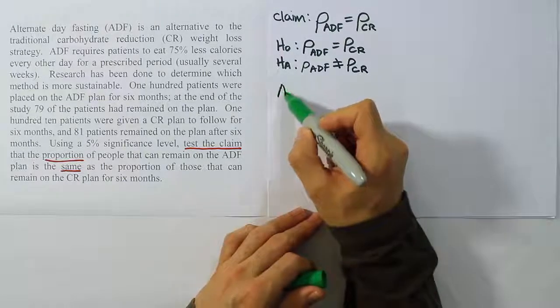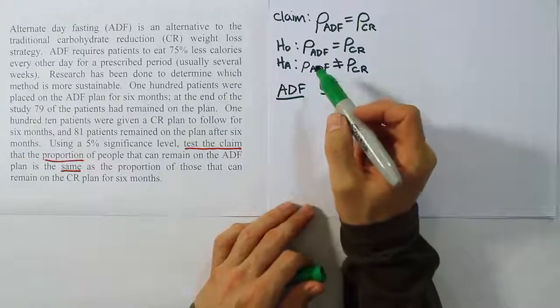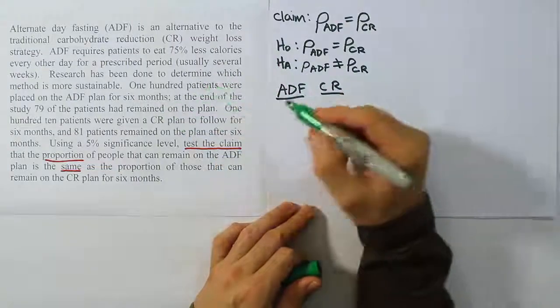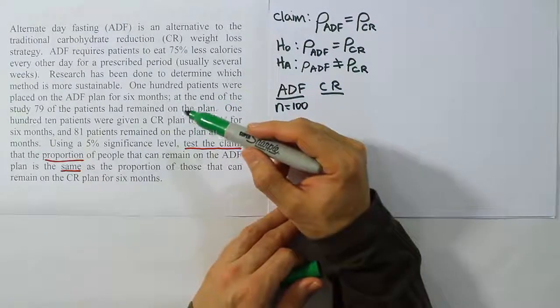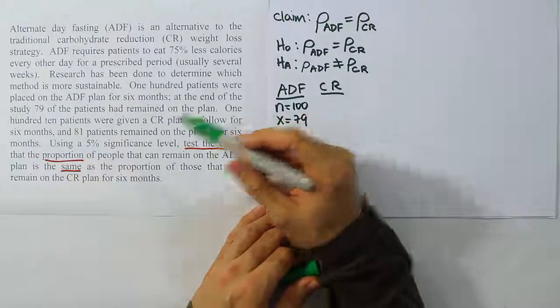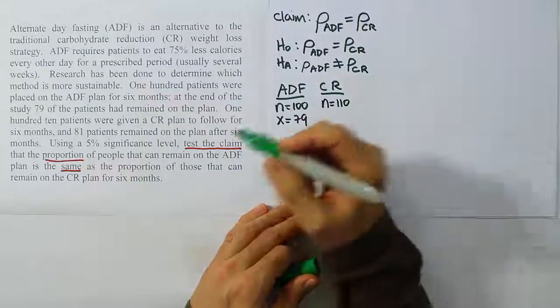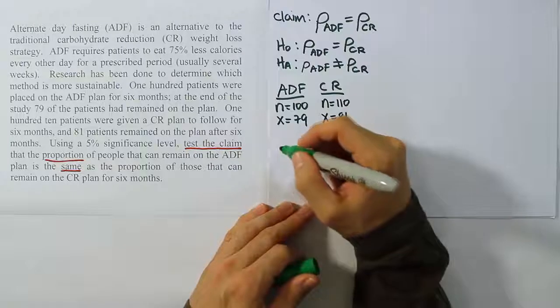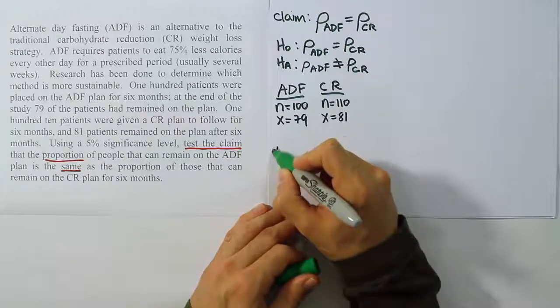From there we're going to write the data down. We have ADF and we have the CR plan. 100 patients were placed on the ADF plan for six months. That's the N for ADF, 100. At the end of the study 79 patients had remained on the plan. So the X here is 79. 110 patients were given a CR plan. So N would be 110. And 81 remained on the plan after six months. Then they have an alpha level of 5%.